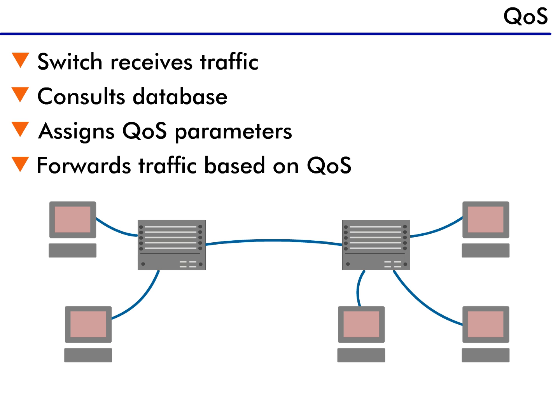With intelligence located on the switch, the higher priority traffic is processed first because the switches are configured to support QoS. There are many different protocols available to support QoS, and the most common of them will be discussed in following lessons.